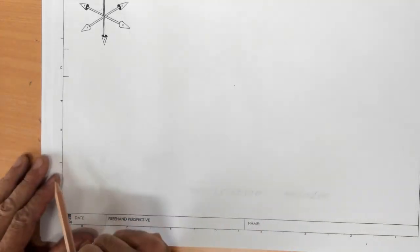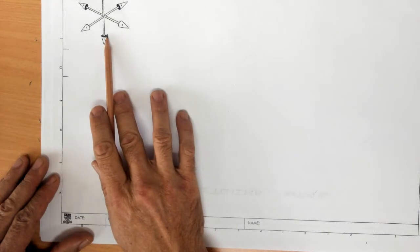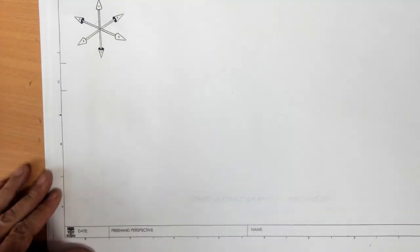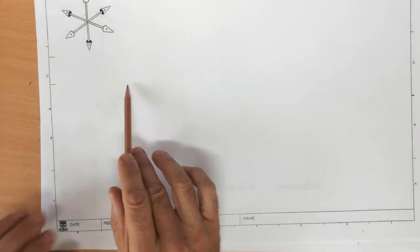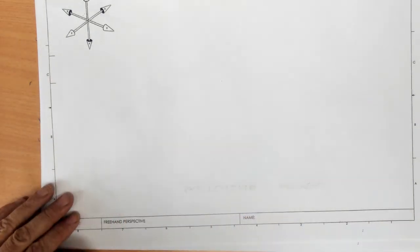Right, what we're going to talk about now is three axes of space, this little diagram here, and what that's trying to do is get rid of the idea of having to draw a horizon line with vanishing points on the page.